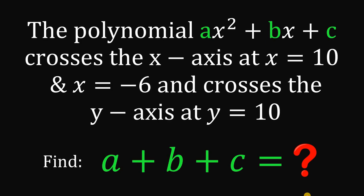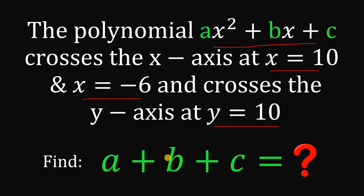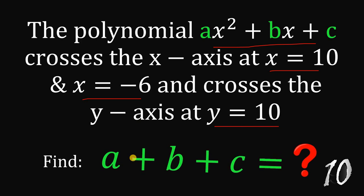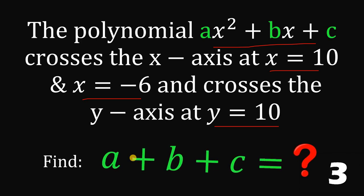This question is taken from the Berkeley Math Tournament. The polynomial ax squared plus bx plus c crosses the x-axis at x equals 10 and x equals negative 6, and crosses the y-axis at y equals 10. The question is: find the value of a plus b plus c. You can pause this video if you want to give this problem a try. Now let's answer this question together.